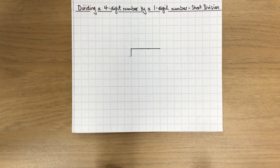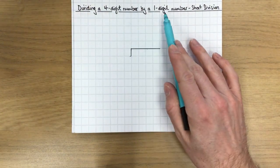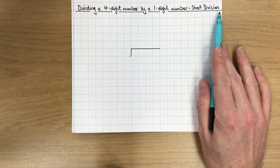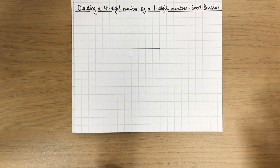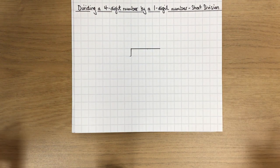This video is going to look at how we divide a four-digit number by a one-digit number using something called short division, or as we sometimes more commonly know it, the bus stop method.